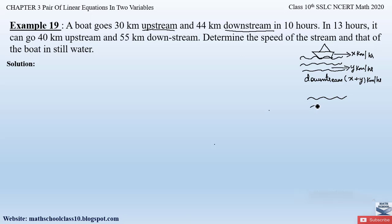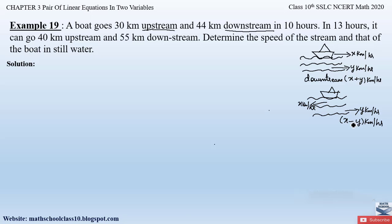Similarly, in upstream the water is flowing in one direction and the boat is moving in the opposite direction. If the boat moves at x kilometers per hour and the water flows at y kilometers per hour, the total speed will be x minus y kilometers per hour. If moving in the same direction, speeds are added; if in opposite directions, speed is subtracted. This is the case in upstream.